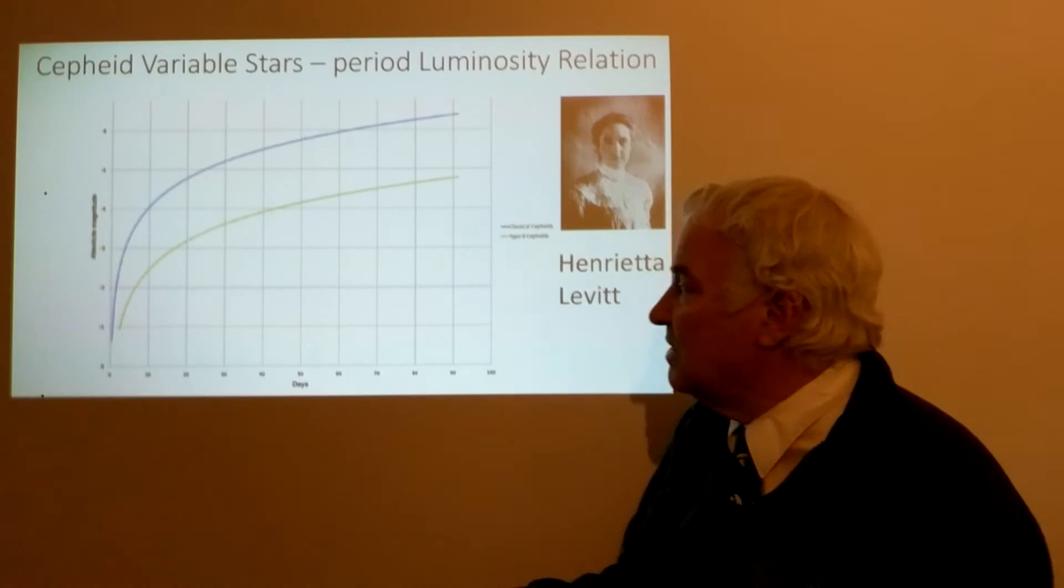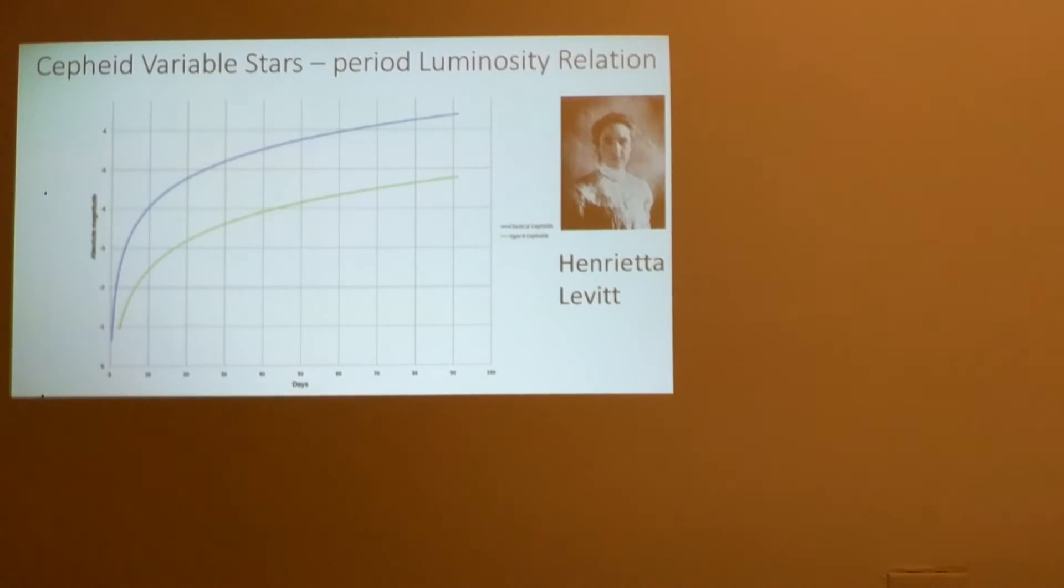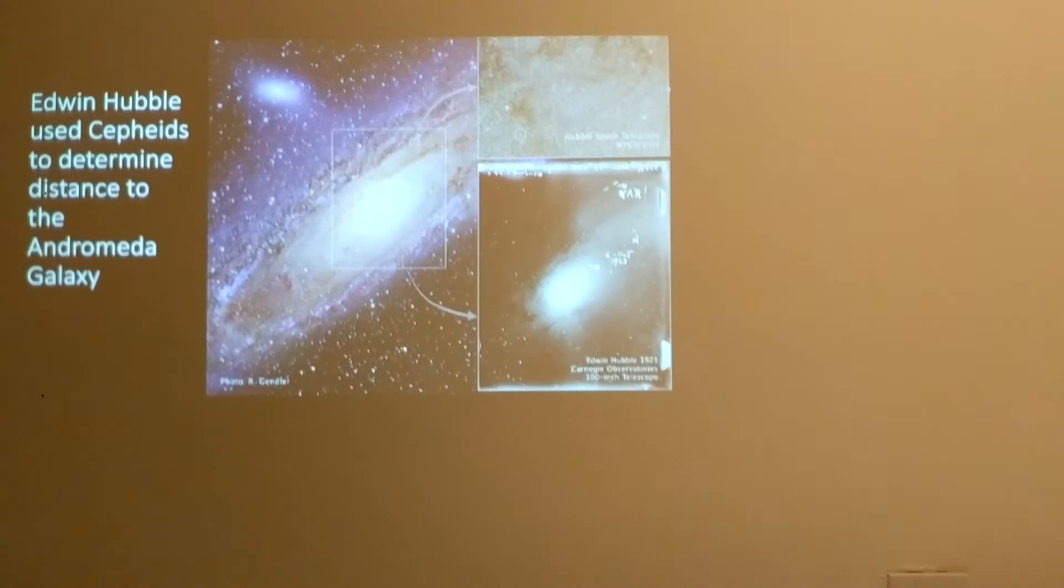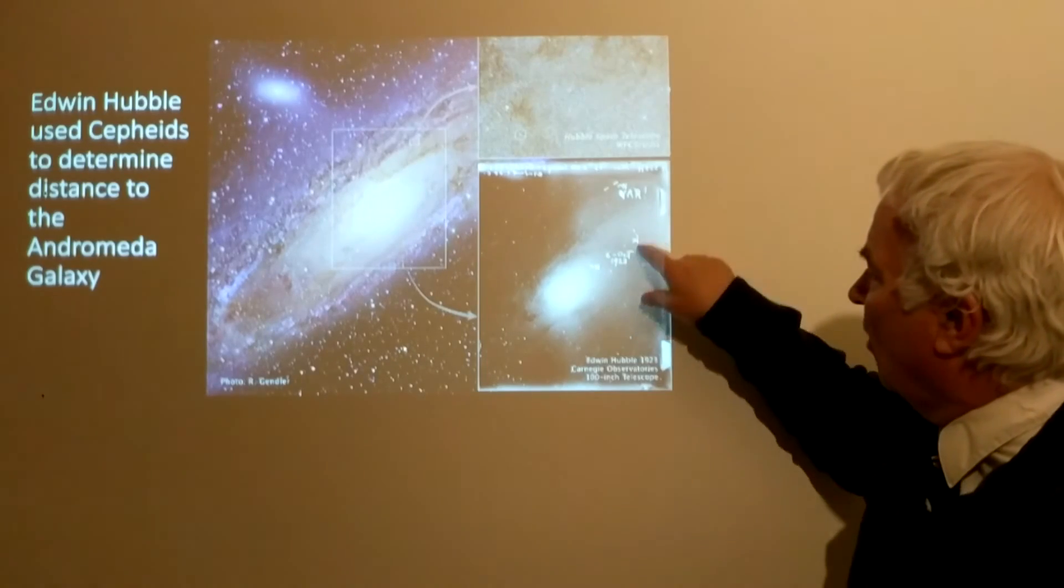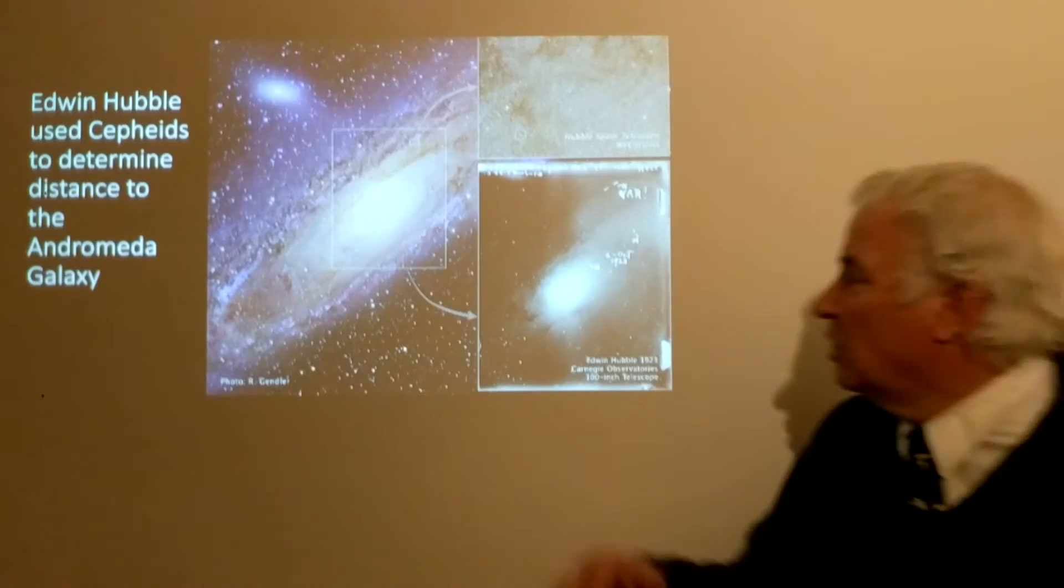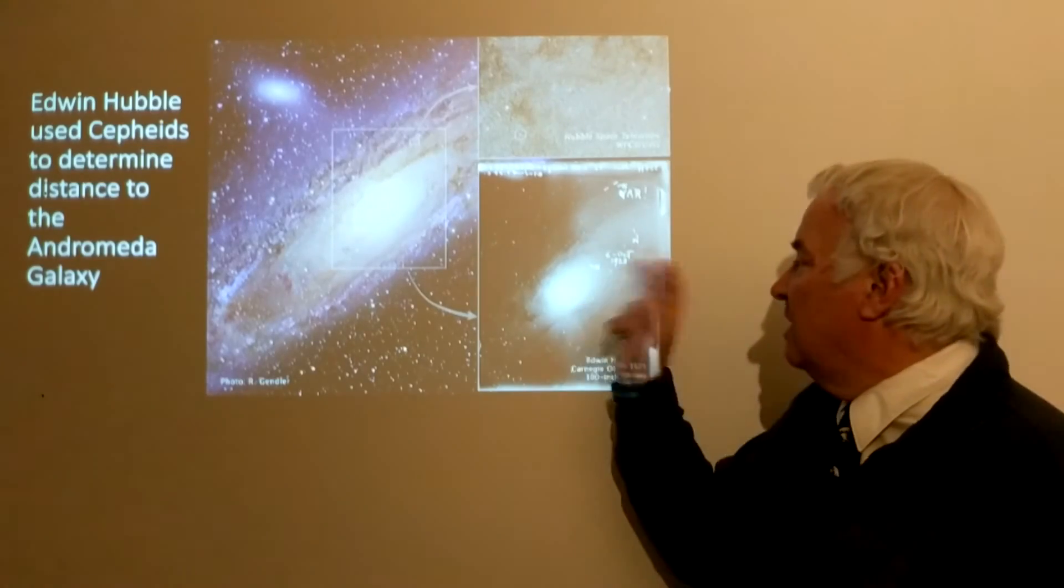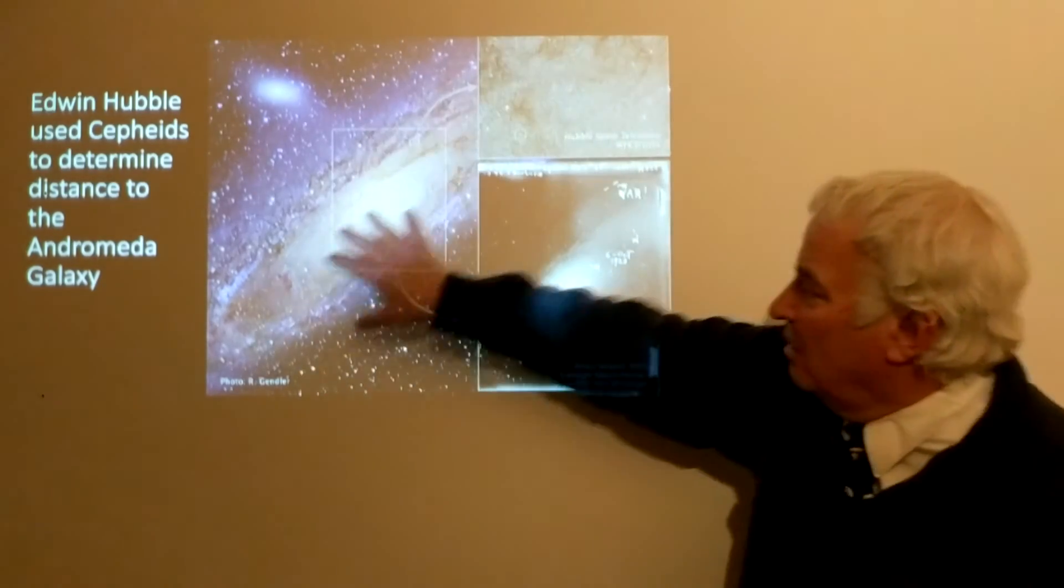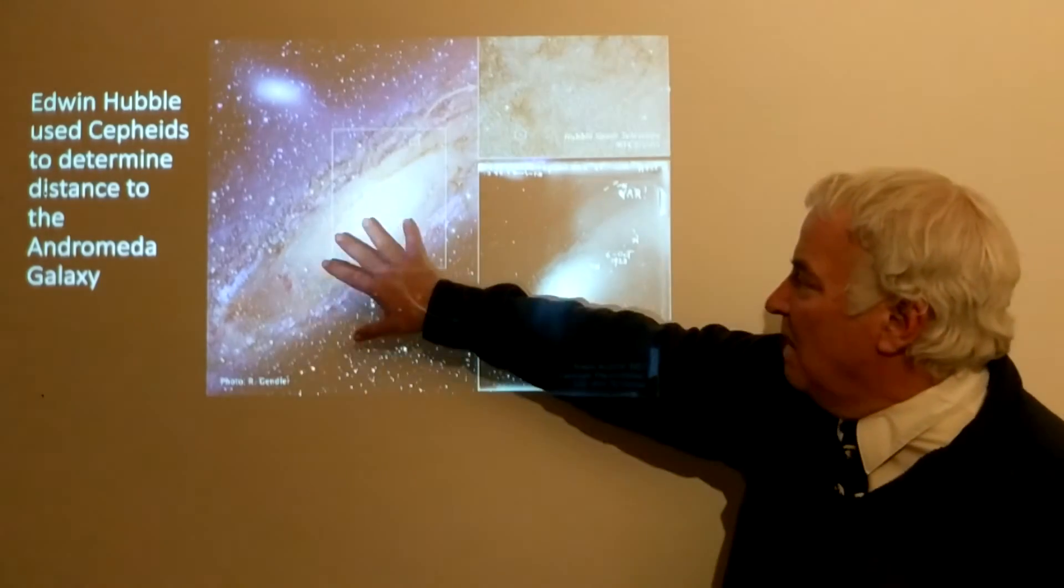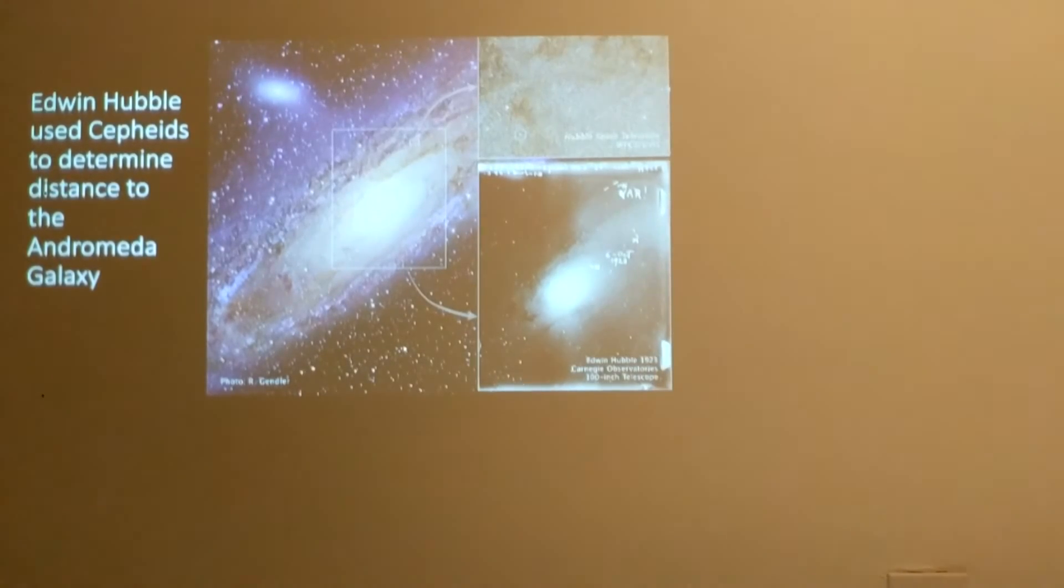And this became very important because it allowed Hubble to use Cepheids to determine the distances to galaxies, even the Andromeda galaxy. These are actual Hubble's photographic plates where he is marking that there are variable stars there. And by measuring the brightness and the period he found that these had to be extraordinarily far away. This showed that the Andromeda nebula was actually a galaxy. And he could measure the distance to the Andromeda galaxy using this method of the period luminosity relationship of Henrietta Leavitt.